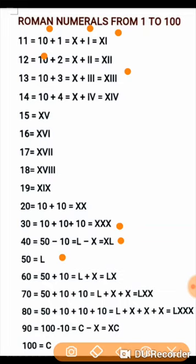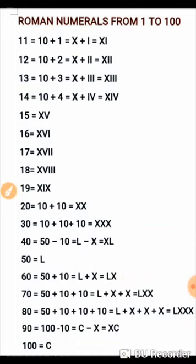60 is 50 plus 10, which is LX. 70 is 50 plus 10 plus 10, which is LXX. 80 is 50 plus 10 plus 10 plus 10, which is LXXX. Since X is now repeated three times, for 90 we take 100 minus 10. Since 100 is represented by C and 10 by X, and there is a minus sign, X is written before C — so 90 is written as XC. Finally, 100 is represented by C.